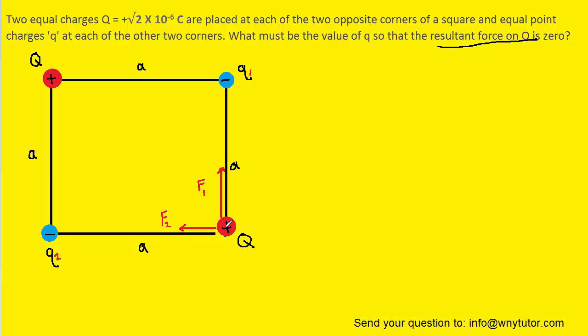And then we can call this charge Q2. Finally, we have the repulsive force between this charge, which is positive, and this other charge, which is positive. They'll push away from each other, and that's going to cause a force acting in this direction here. And we can go ahead and call that force F3.